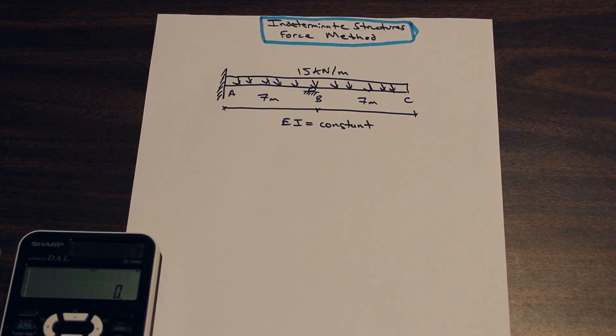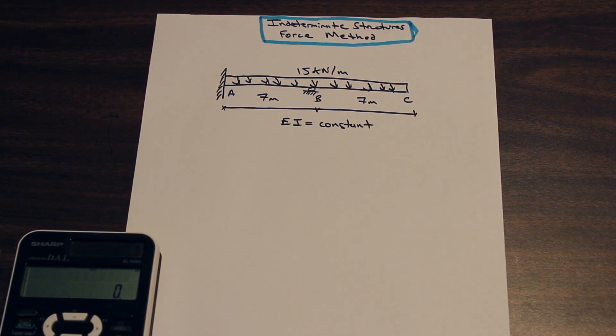Today we're going to be talking about indeterminate structures, and we're going to be doing a quick, pretty straightforward example on the force method, which is also known as the method of consistent deformations. This is some third year content. You're starting to get into structures that don't have equal number of reactions to number of equations, and I'm going to show you a pretty simple example, and then maybe we could do a more complicated one after.